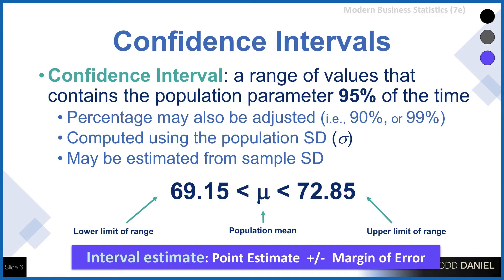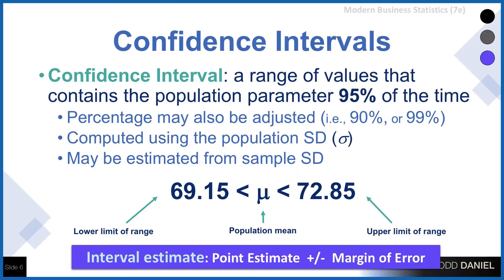Here's what it would look like: the population mean is greater than a lower limit and less than an upper limit. This confidence interval is a range of values that contains the population parameter 95% of the time. That percentage may be adjusted — we could set it at 90%, 99%, or even 94.2%. It is computed using the population standard deviation, sigma, except in cases where we don't actually know the population value.